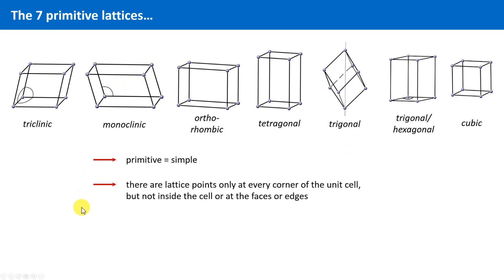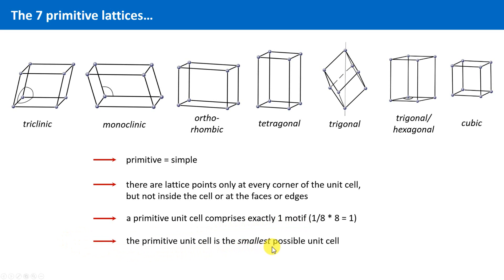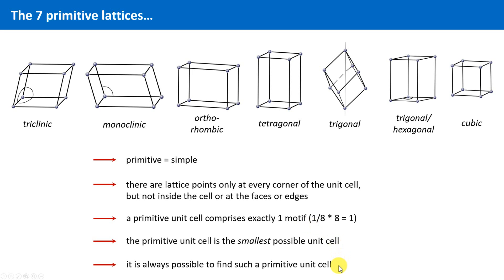A primitive unit cell comprises exactly one base or motive — not one atom, but one complete base. This also means that the primitive unit cell of a given crystal system is automatically the smallest possible unit cell. Because our whole crystal is built by sticking unit cells together, the unit cell must comprise at least one base, and it is always possible to find such a primitive unit cell.